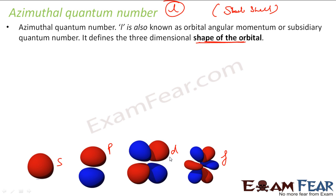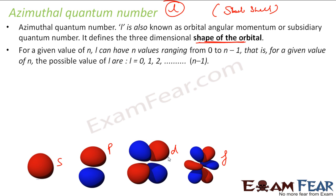Subshell. And for a given value of n, n can have values ranging from 0 to n minus 1. So for a given value of n, L can have values from 0 to n minus 1.